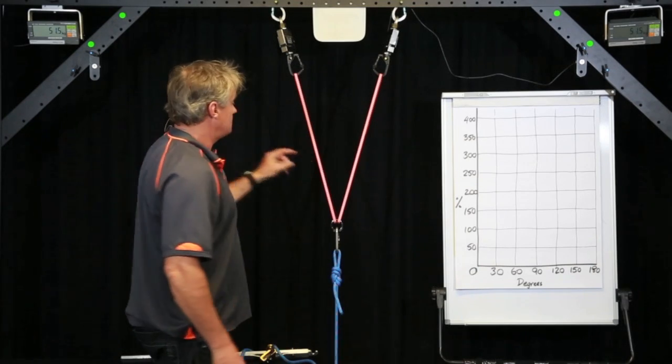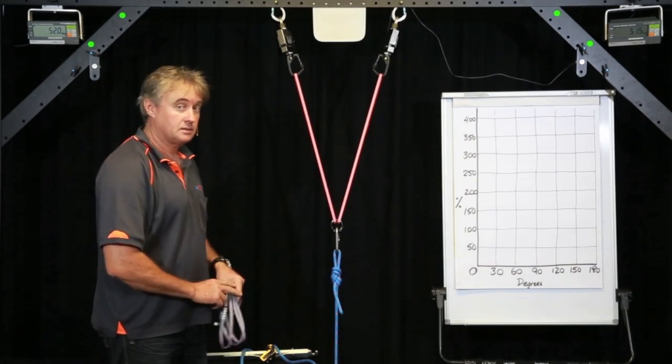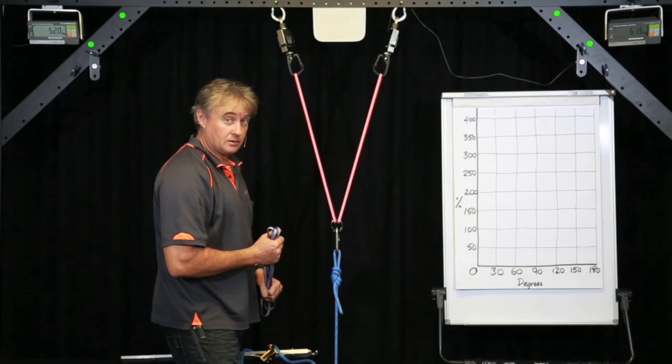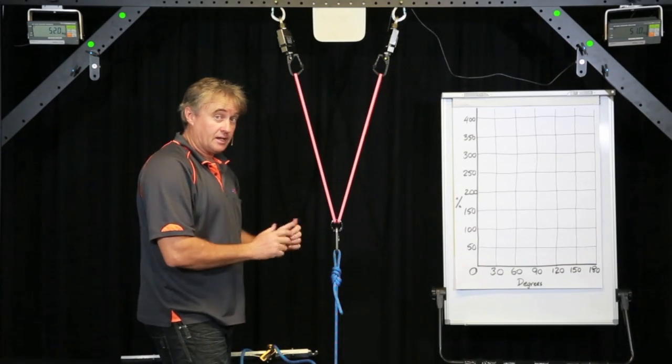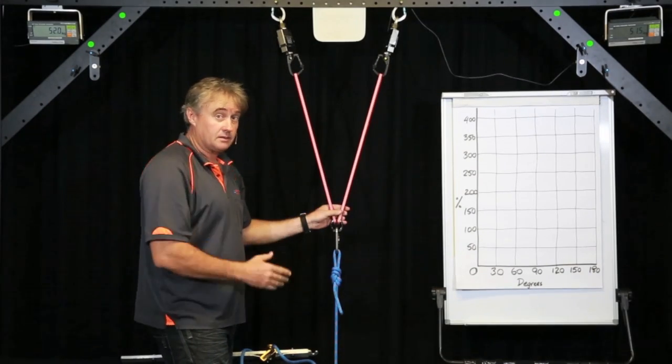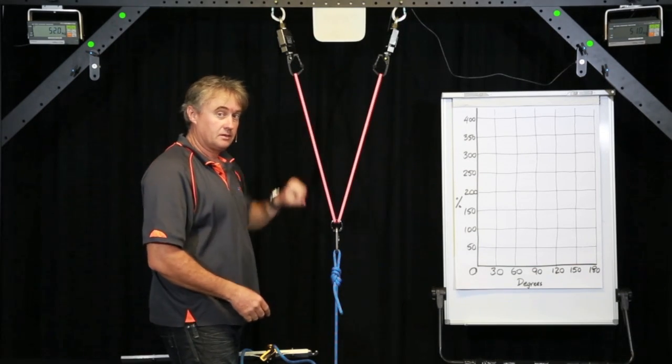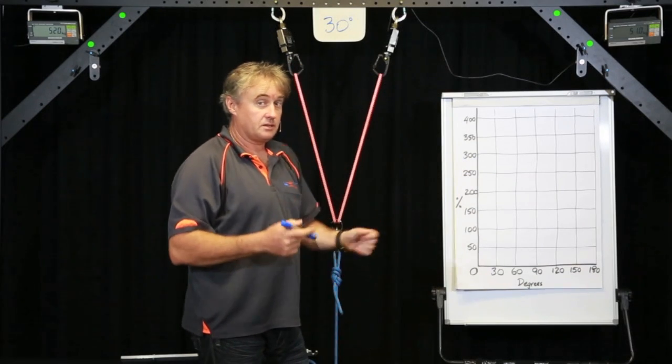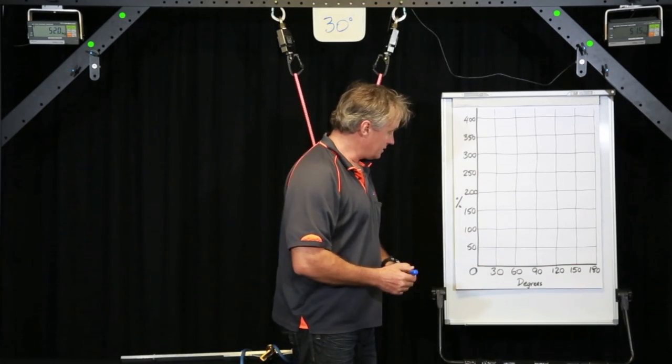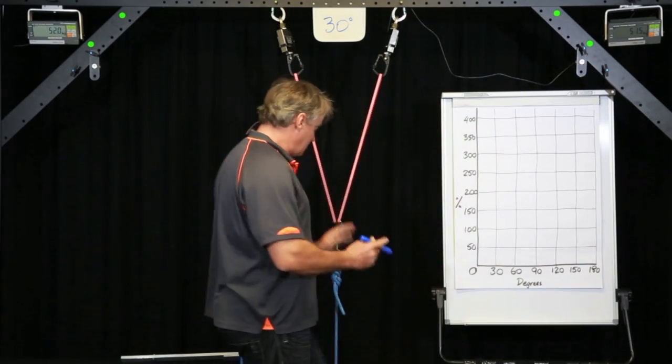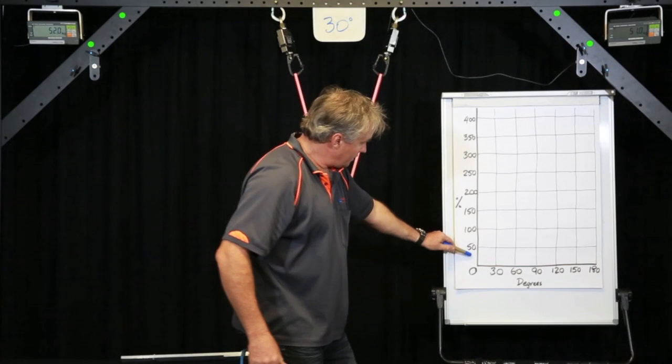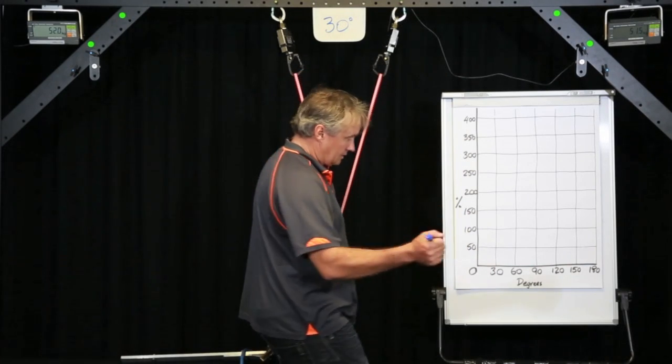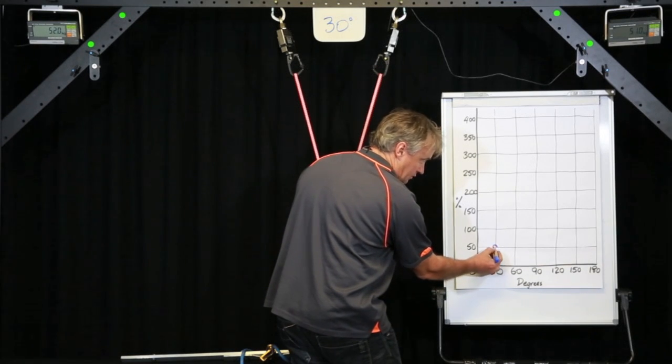So first things first, we need to estimate what this angle is. There's a few methods that people use to make that estimation. You hold two fingers up like that and that's pretty much that angle inside there, roughly 30 degrees. You can get iPhone apps and all sorts of things to try and measure that accurately. But down in this region it doesn't matter. There can be a bit of variance and it's not going to change much in the loading. 30 degrees. And you'll notice on this cell we've got 52, on this cell we've got 51. So it's pretty close to 50%. So at 30 degrees we've got 50% of the load on each anchor.